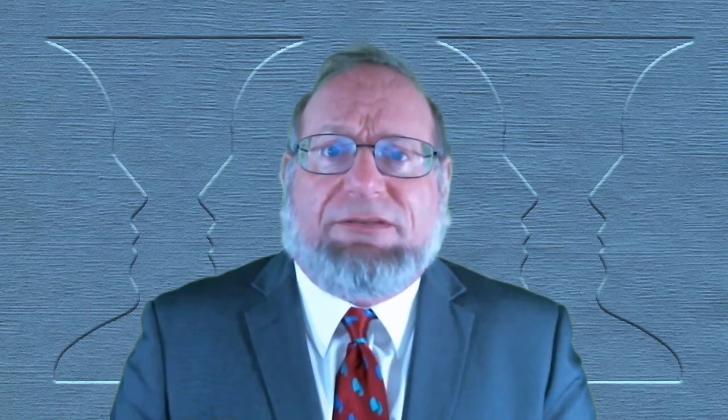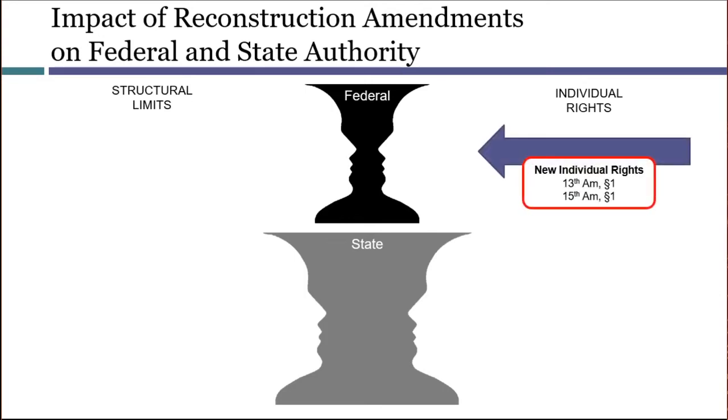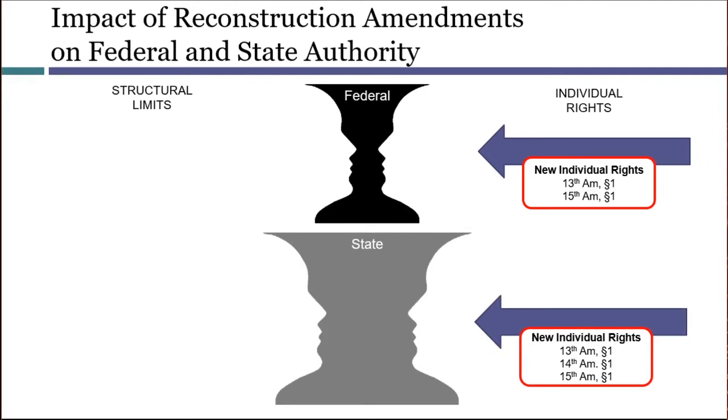Most people agree that Barron was correctly decided based on the Constitution as it existed in 1833. But it meant that states could violate rights with impunity, and some of them did. The most obvious violation was slavery, which denied enslaved people their liberty and pretty much any other rights. After the Civil War, a national consensus emerged that the states could not always be trusted to protect individual rights, and so more was needed on the federal level. The Reconstruction Amendments created new rights limiting both the federal and state governments. Keeping Barron in mind, the 13th, 14th, and 15th Amendments explicitly said that the rights they created applied to the states. The Reconstruction Amendments also gave enforcement powers to Congress, which could further limit state laws through the Supremacy Clause.